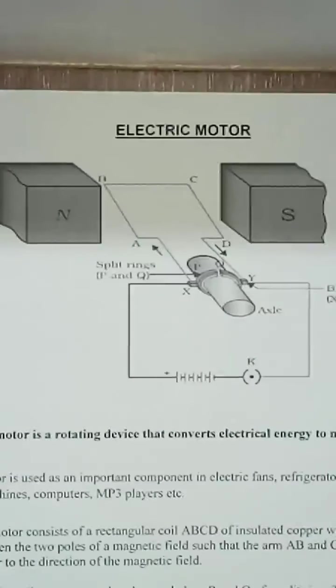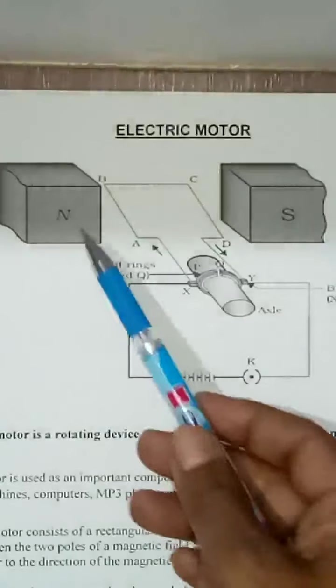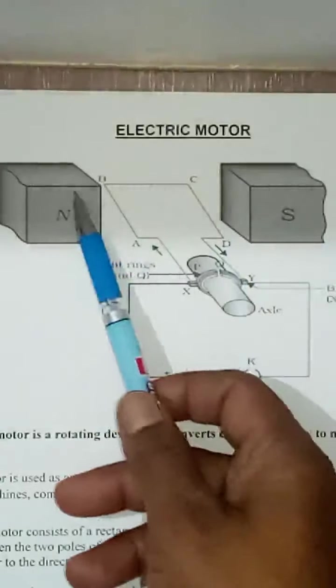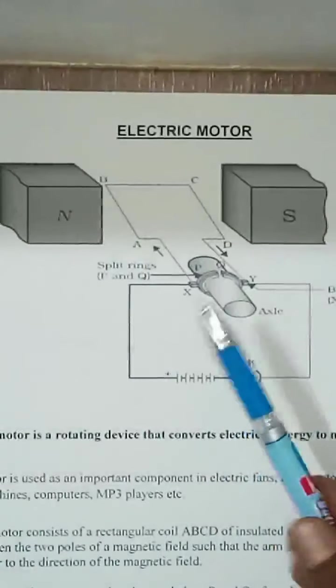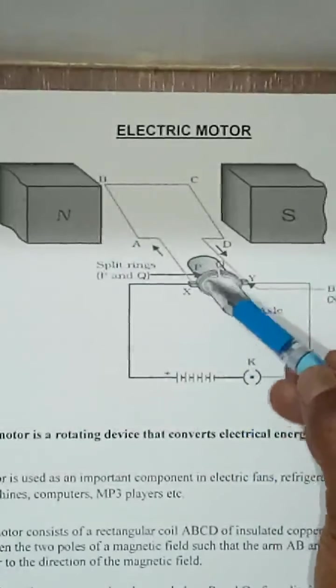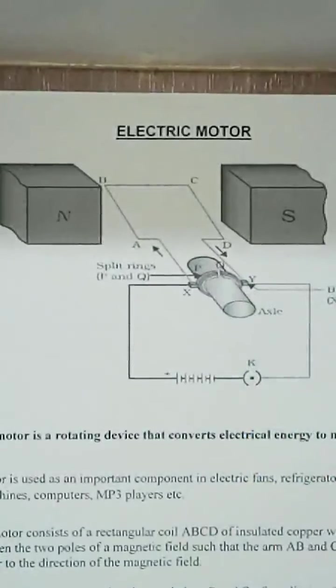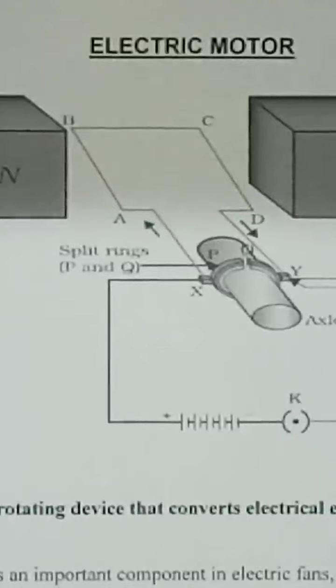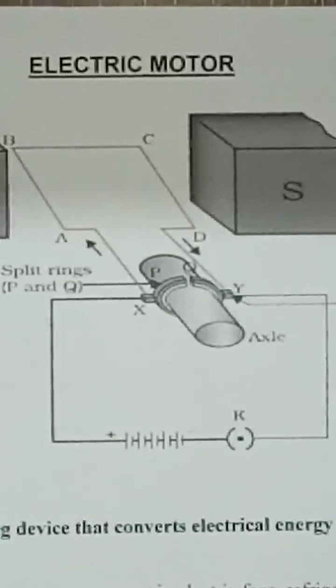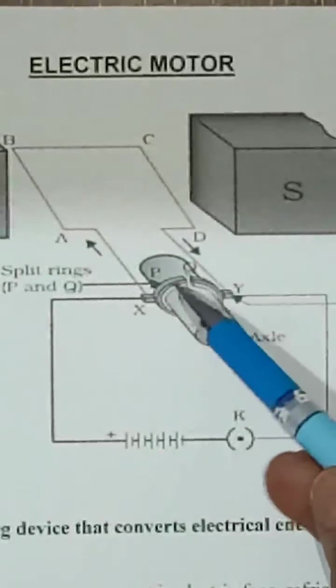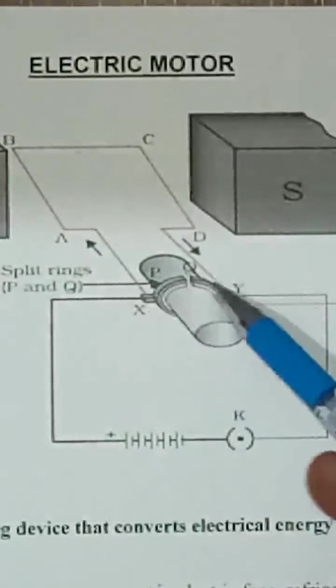You see there is a coil in between the two magnets. North and south pole are facing each other. These are the two magnets north and south, and there is a rectangular coil in between that. And here this part, if I am broadening it in order to show you, these are what split rings. Split rings on both the sides.